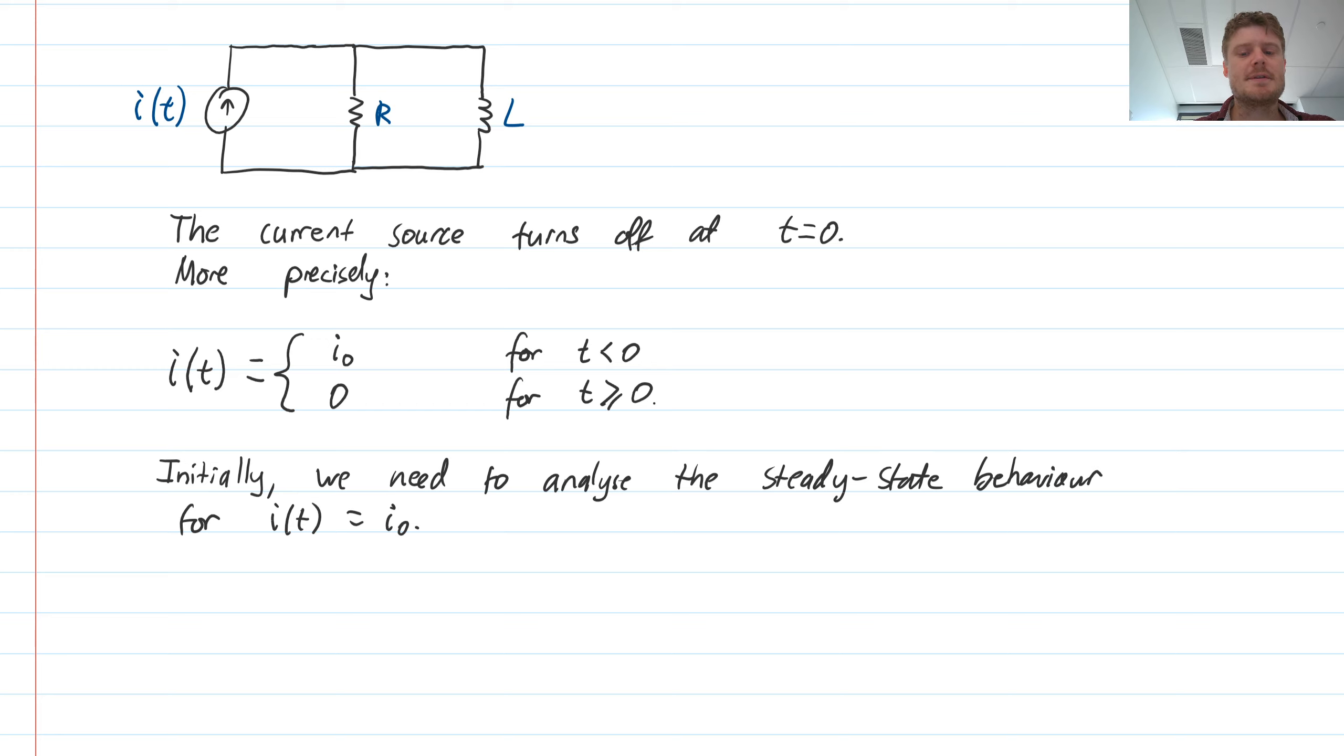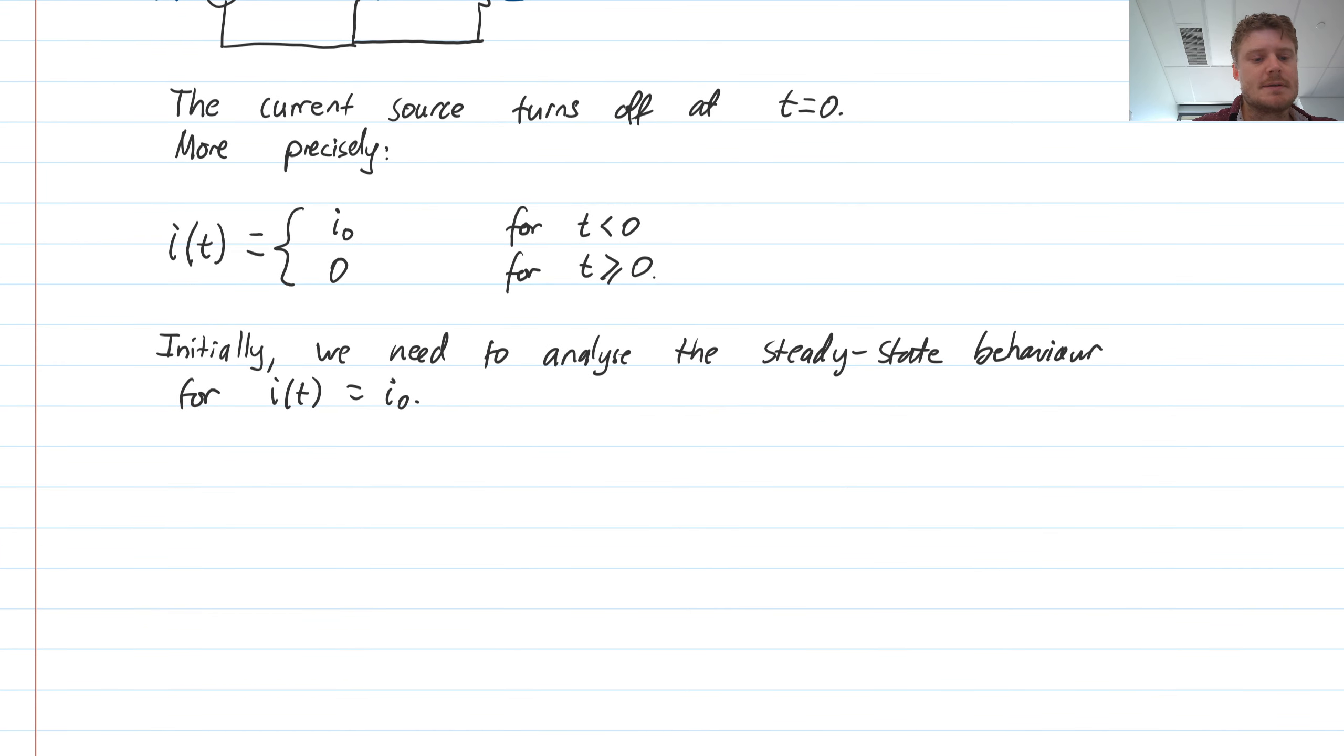So if we draw what this circuit will look like under steady state conditions, then we will have the following. So the steady state behavior will be, in the beginning, will be just a basic current source with fixed current i0. There was a resistor R. And then our inductor, if we think back to our previous video, our inductor under steady state conditions just becomes a short circuit.